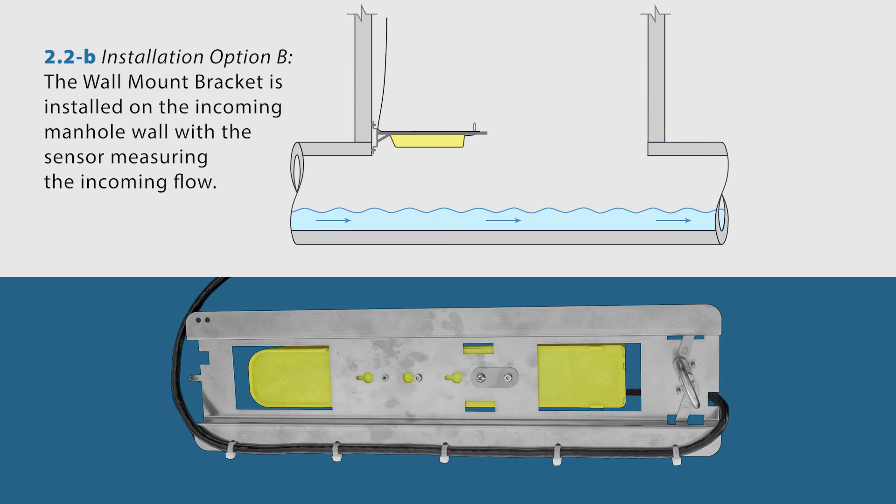When the wall mount bracket is installed on the incoming manhole wall, with the sensor measuring the oncoming flow, thread the sensor cable through the notch on the loop end of the sensor bracket and cable tie the sensor cable to the bracket using the five holes along the edge of the sensor bracket.